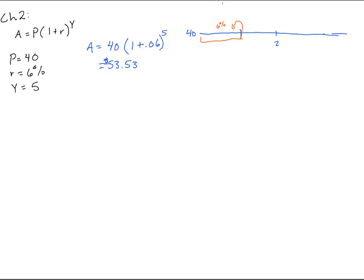At the end of two years, we would have another 6% that would come, and we'd add that 6% on. And we'd do that at the end of three years, and four years, and five years. And that's what this formula does.